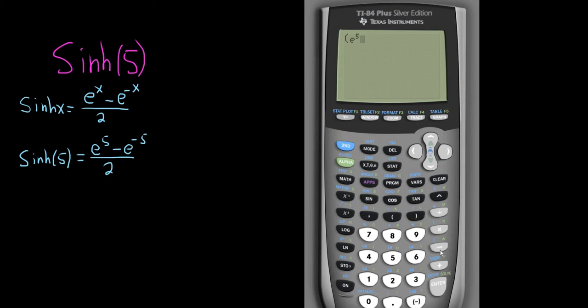Make sure to hit the minus key, not the negative sign. This is the minus key here underneath the x. And then second ln, then this is the negative key right down here, and then I'll hit my arrow key, and then parentheses, and then divide it by 2. So that's it, 74.203.